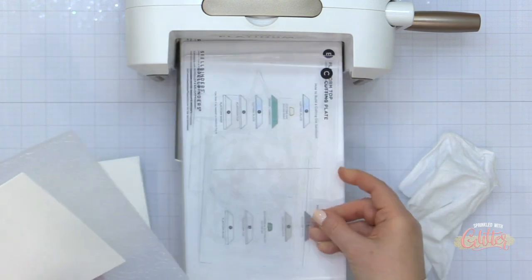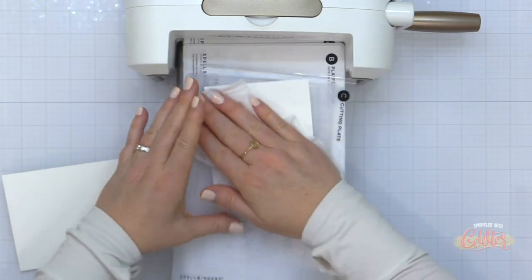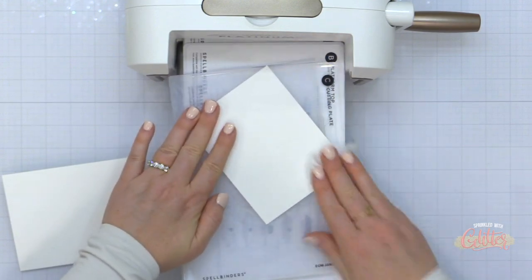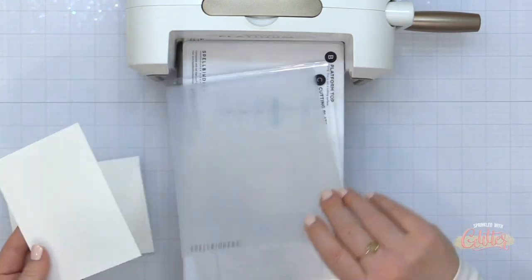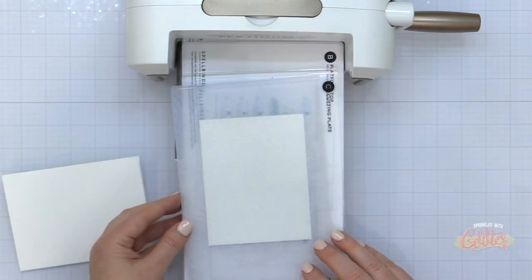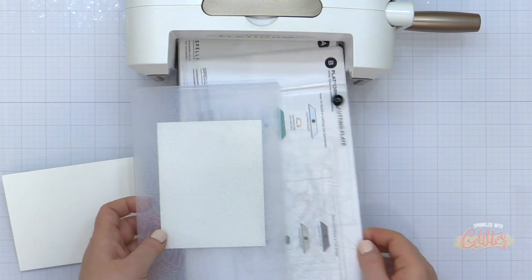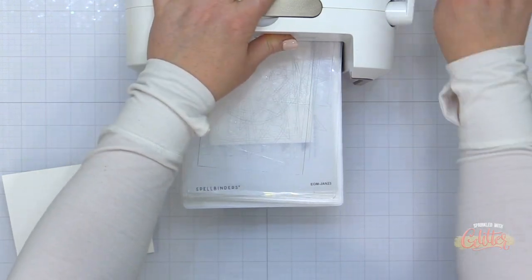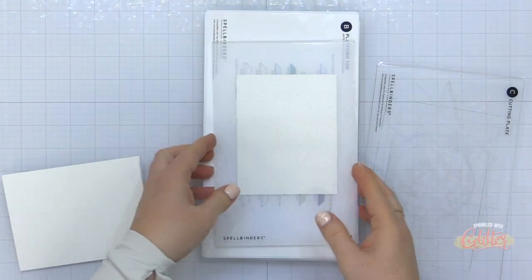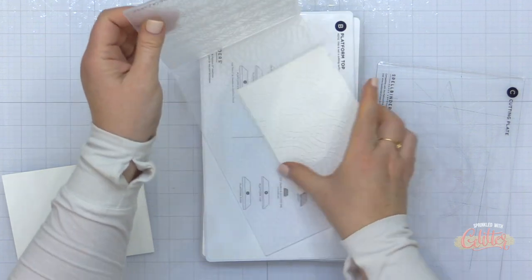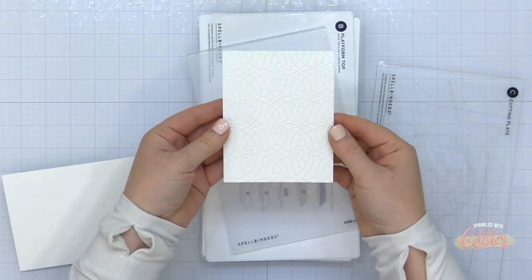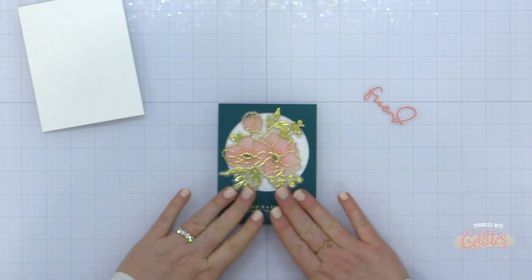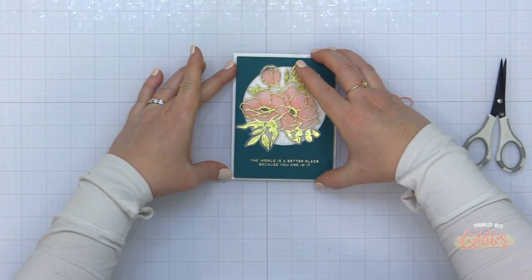Now I am using the January embossing folder of the month from Spellbinders and I am going to emboss a panel of white cardstock. So in order to do that with the universal plate system I have the platform A, I have the platform top which is B, and one C cutting plate. I have wiped the cardstock with a baby wipe before placing it into the embossing folder and I topped off that embossing folder with just one of the C cutting plates and ran that through my Platinum 6 and I have perfect embossing on this white cardstock. No cracking because I prepped the surface of that cardstock with a damp baby wipe.